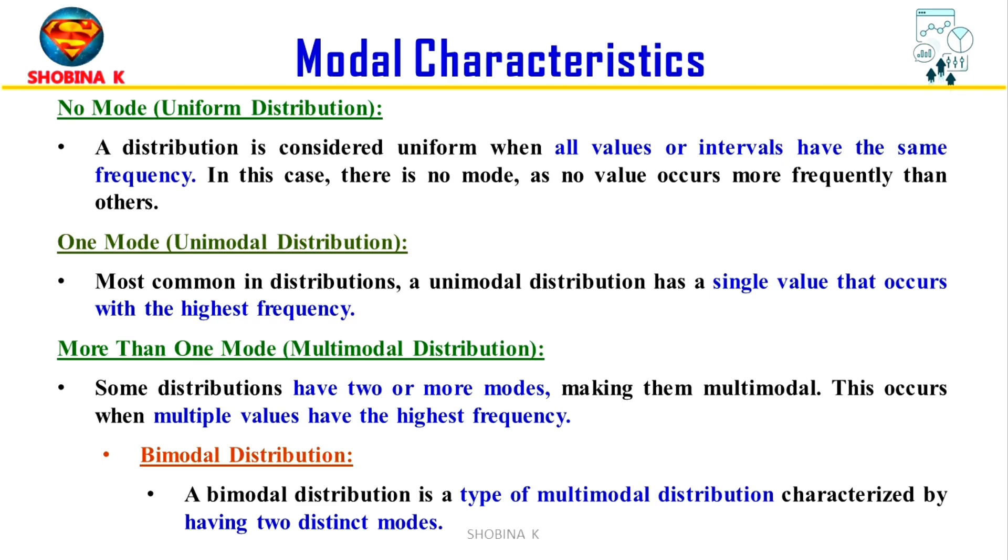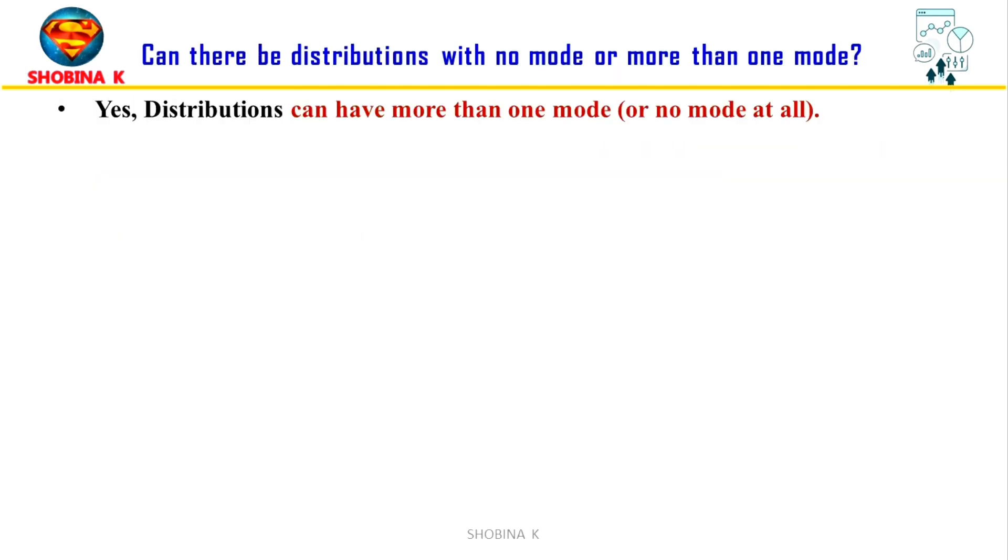And then we have more than one mode. Here two or more values have the highest frequency, and this distribution is considered multimodal. And then we have bimodal distribution. Here two distinct values occur with the highest frequency. The frequency distribution typically shows two distinct peaks or modes, and it is a specific type of multimodal distribution characterized by exactly two modes. So distributions can have more than one mode or no mode at all.